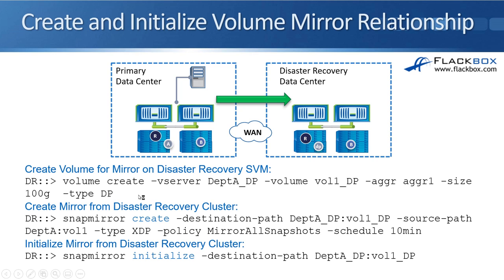That uses a standard volume create command. In our example we've got volume create, the Vserver that we're replicating into is named department_A_DP, and the volume we're creating we'll call vol1_DP. Specify the aggregate, the size of the volume, and then the difference between this and creating a normal flexible volume is we specify type DP. This means it is going to be used as a SnapMirror destination — it's configured as a read-only volume under normal conditions and auto-grow is going to be enabled.